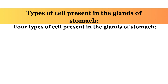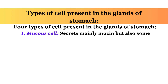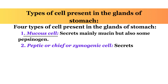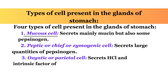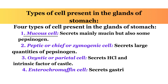Four types of cells present in the glands of the stomach: 1. Mucus cell — secretes mainly mucin but also some pepsinogen. 2. Peptic or chief or zymogenic cell — secretes large quantities of pepsinogen. 3. Oxyntic or parietal cell — secretes HCl and intrinsic factor of Castle. 4. Enterochromaffin cell — secretes gastrin and serotonin.